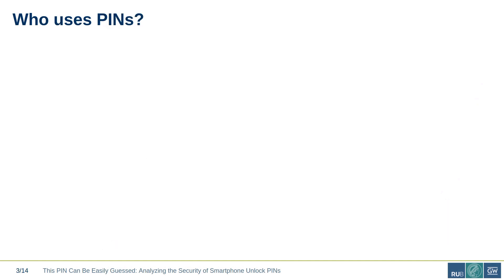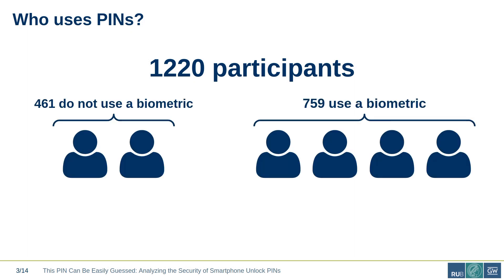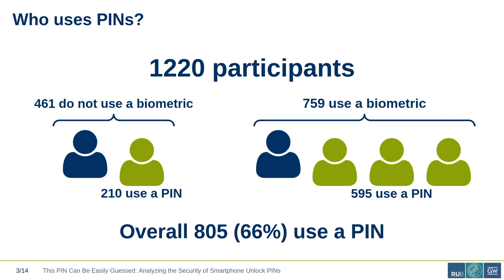To what extent are PINs used? In our user study we had more than 1,200 participants. We asked whether they use biometrics, which revealed that two-thirds do. Those who don't were asked which knowledge-based authenticator they use, showing about 50% use a PIN. Among those who use a PIN in combination with biometrics, the figure is even greater — about 75%. Combining both numbers, two out of three people in our study use a PIN, making it the most widely used unlock method.